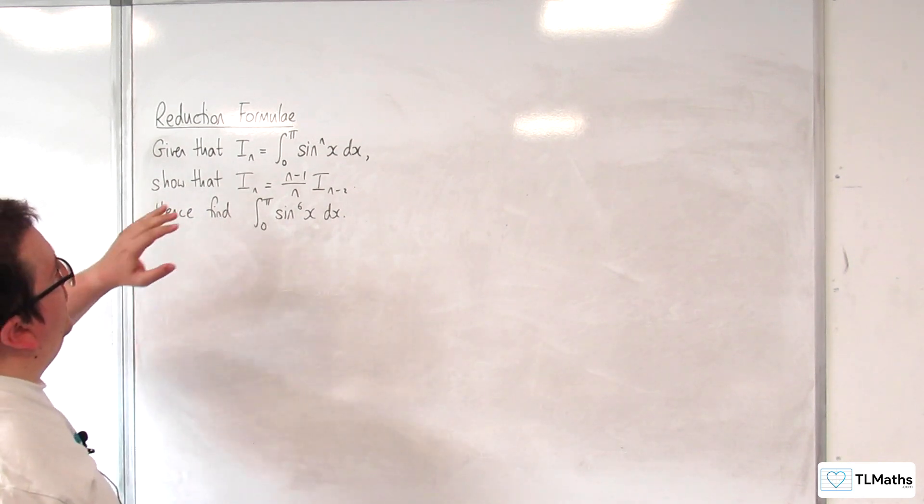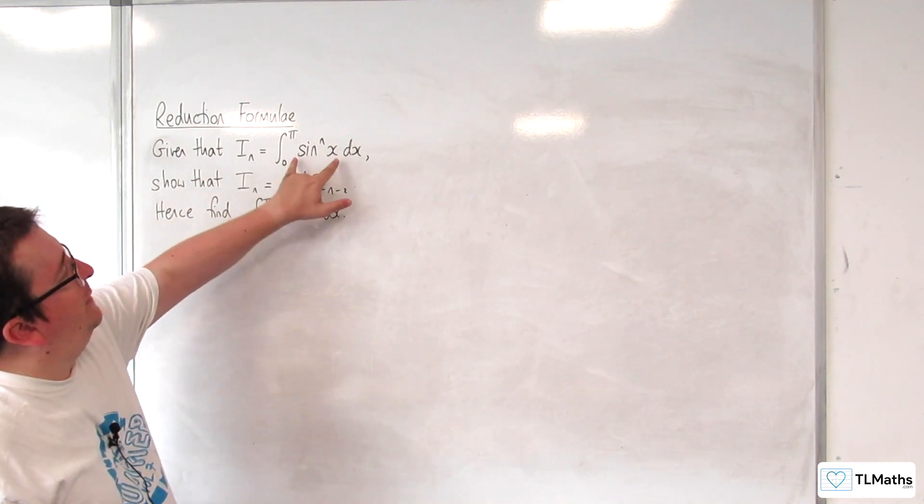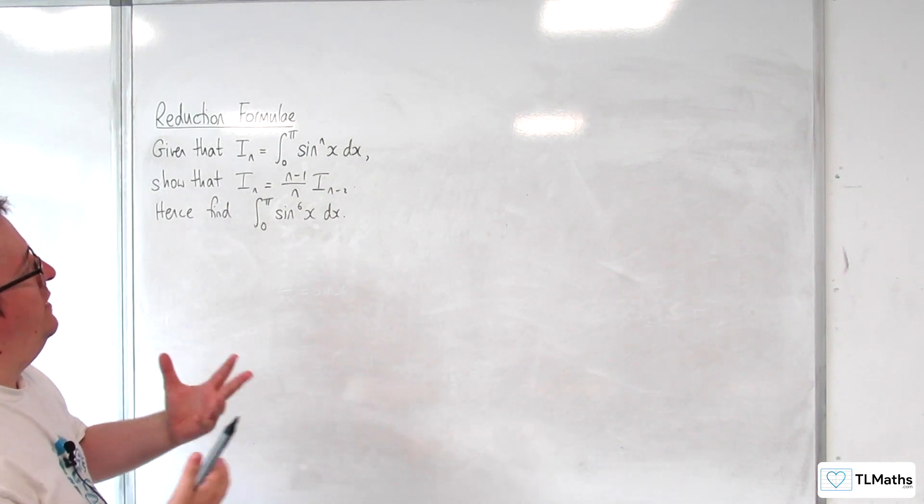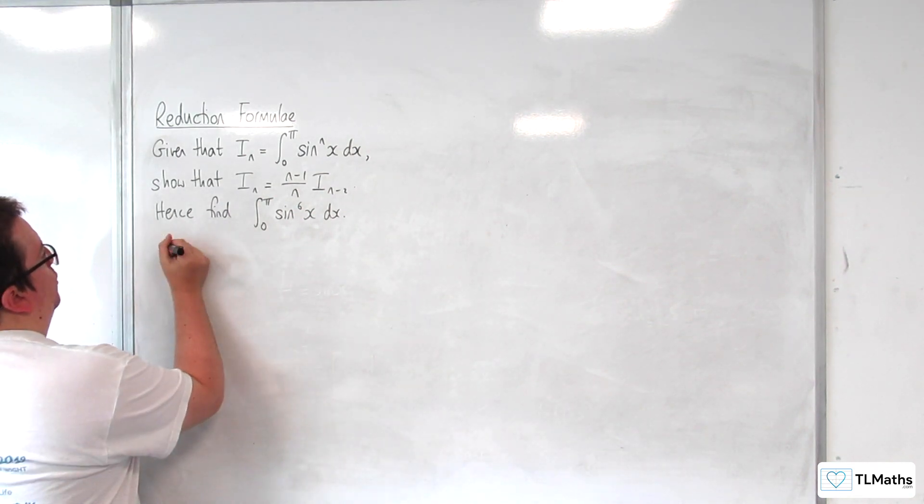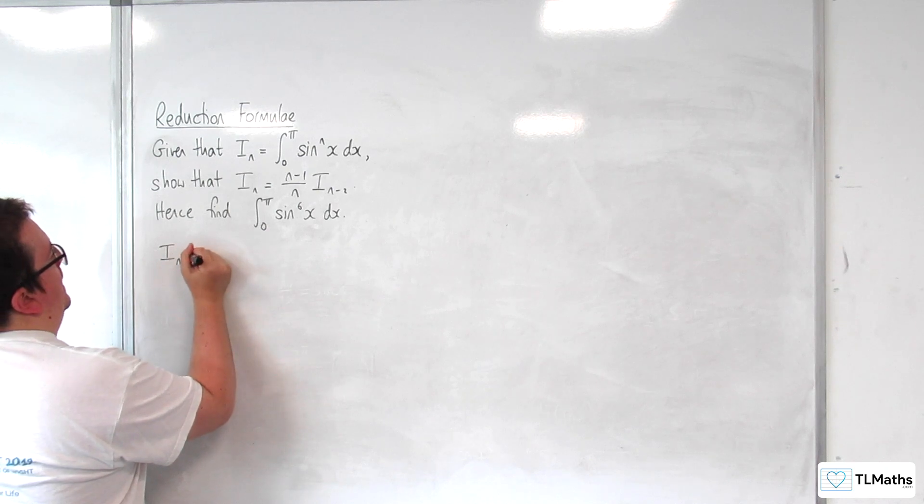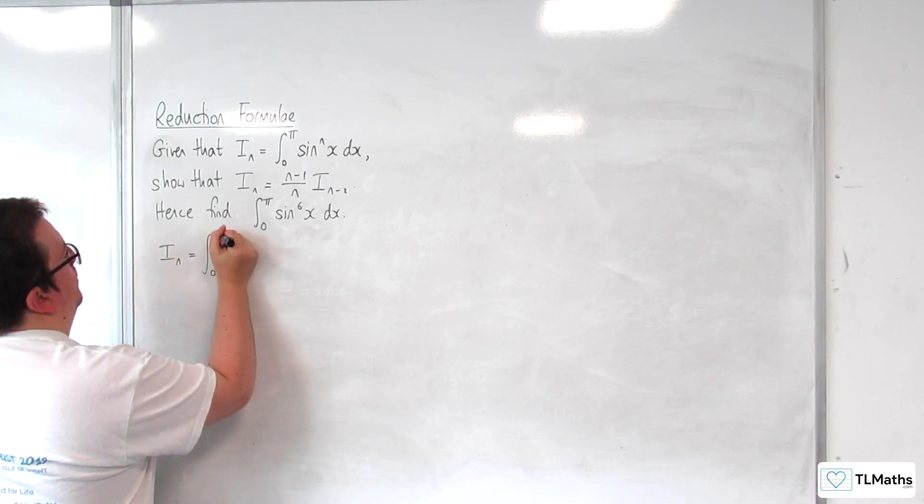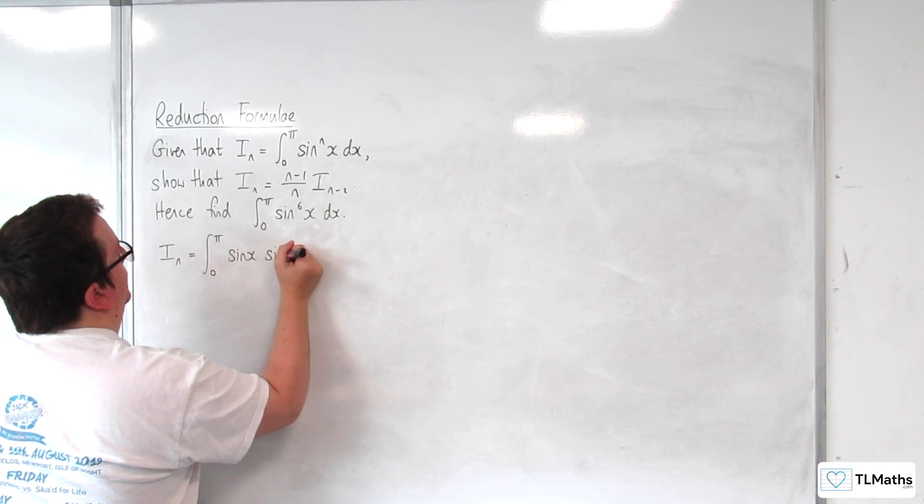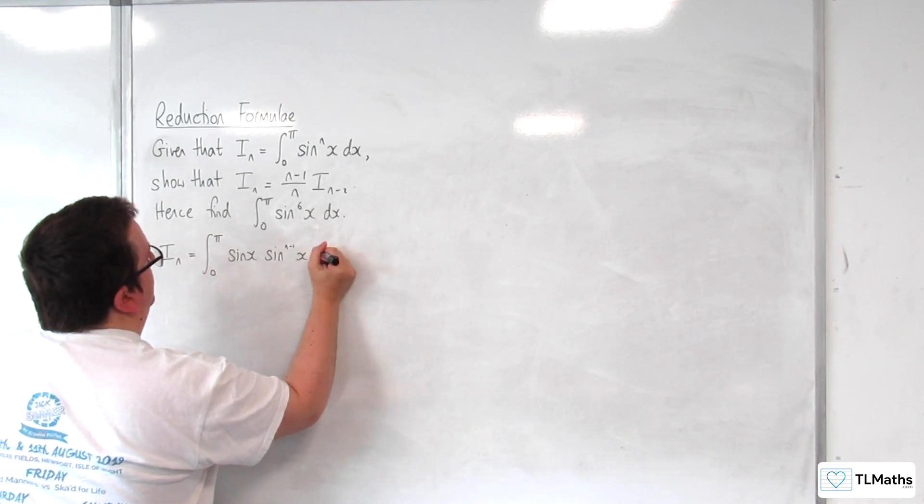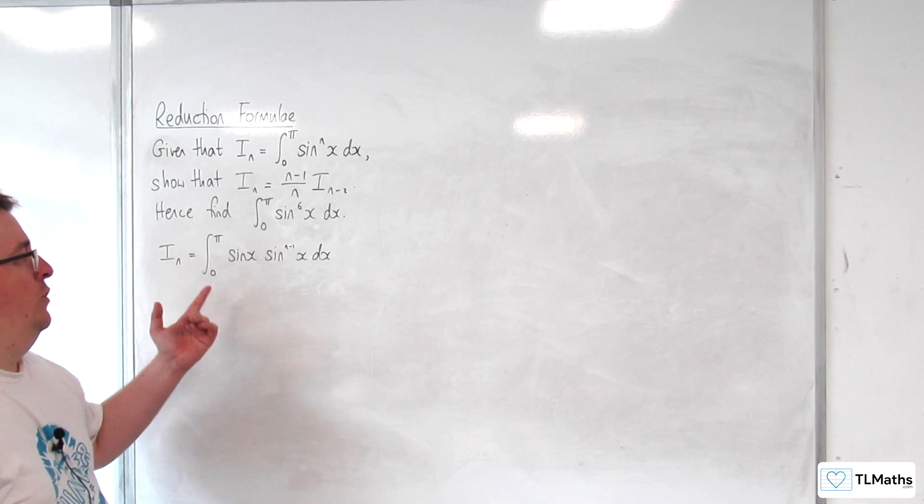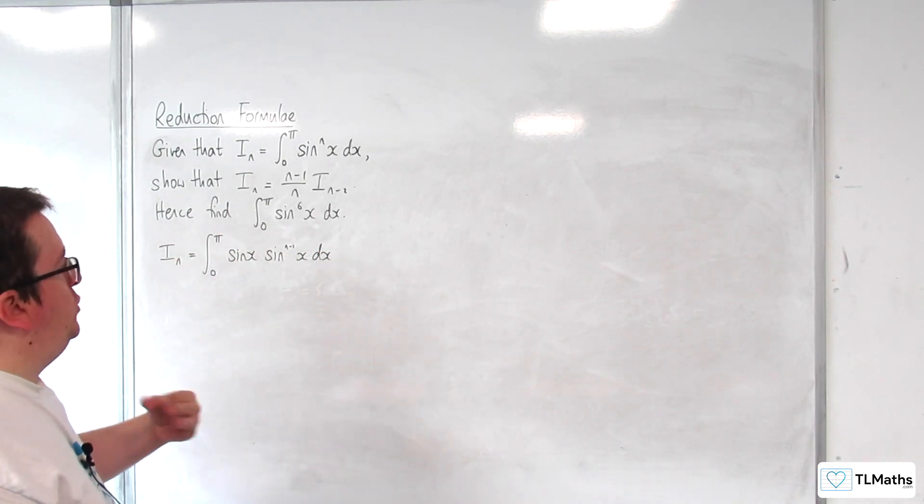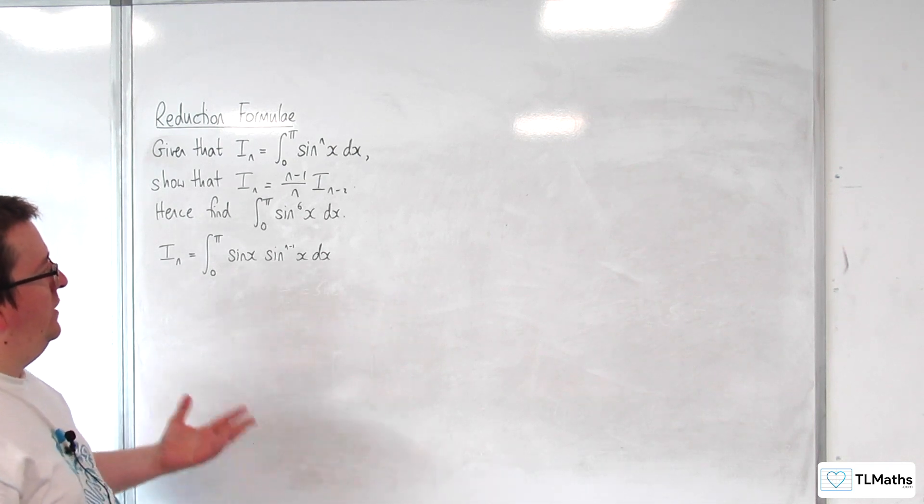Okay, so first things first, this doesn't automatically look like something we can integrate by parts. We need to write it in another form first. I'm going to write this as I_n equals the integral from 0 to π of sin(x) times sin^(n-1)(x) dx. So now we've got a u and a dv/dx, and we just need to choose which one's going to be easiest to work with for u.